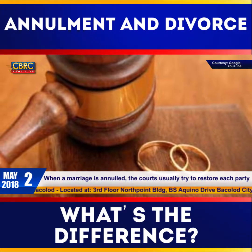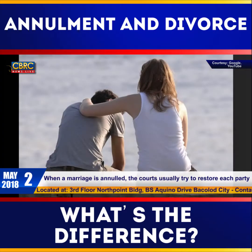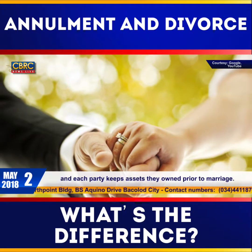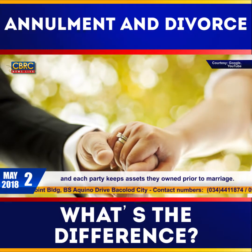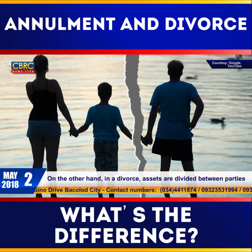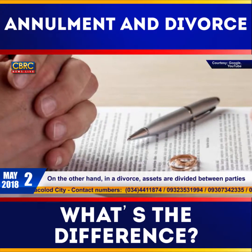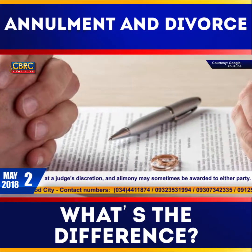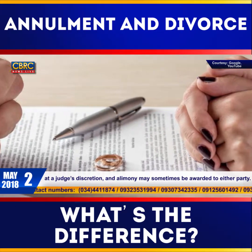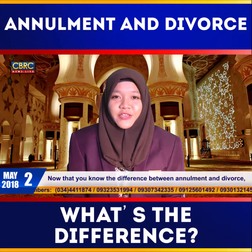Number 3: When a marriage is annulled, the courts usually try to restore each party to his or her original financial state before the marriage occurred, and each party keeps assets they owned prior to the marriage. On the other hand, in a divorce, assets are divided between parties at a judge's discretion, and alimony may sometimes be awarded to either party.